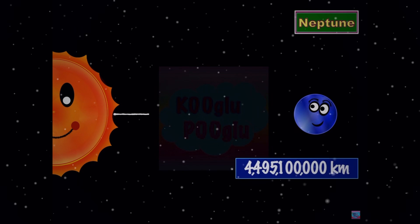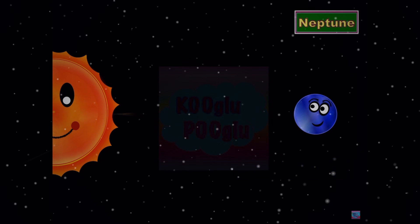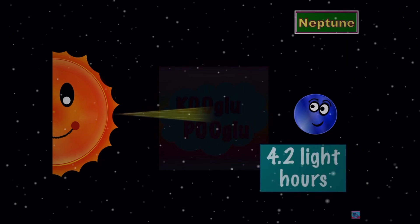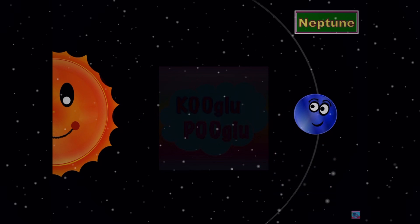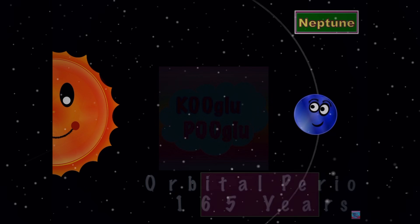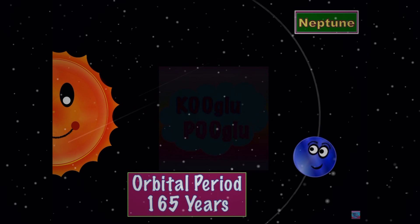Here we have Neptune, which is 4.5 billion kilometers away, and its orbital period is 165 years.